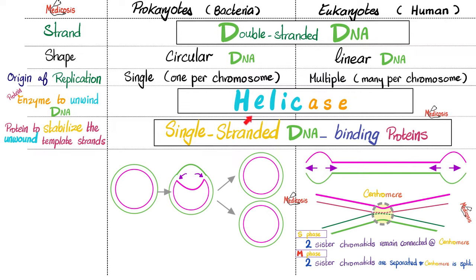Helicase unwinds the double helix in both prokaryotes and eukaryotes. The moment you create the replication fork, the exposed nitrogenous bases are very sticky — they want to bind to something, which would ruin DNA replication. Single-stranded DNA binding proteins stick to those exposed bases and tell them to wait. They also protect the DNA from nuclease, the enzyme that destroys nucleic acids in the nucleus.